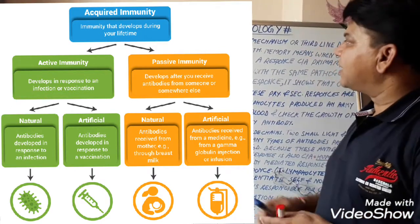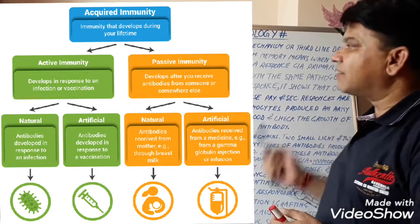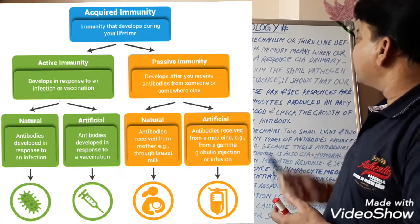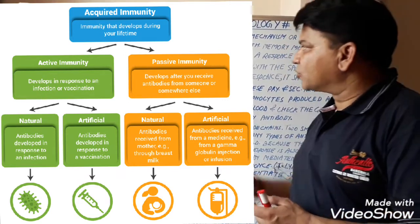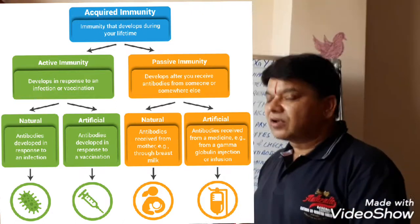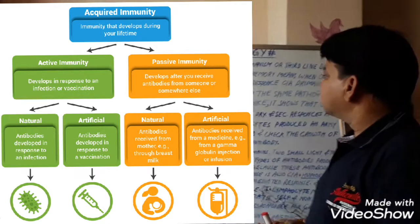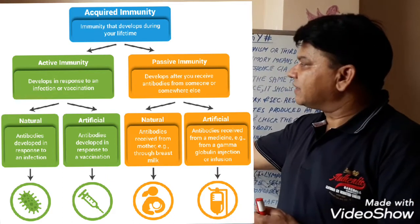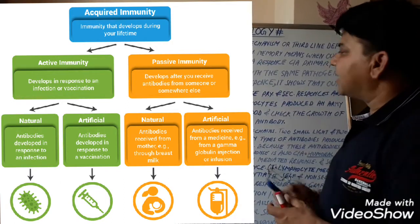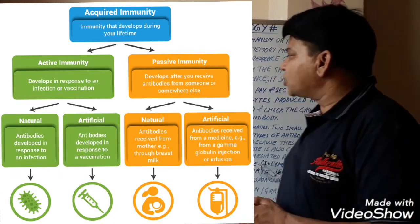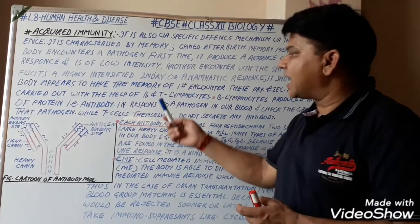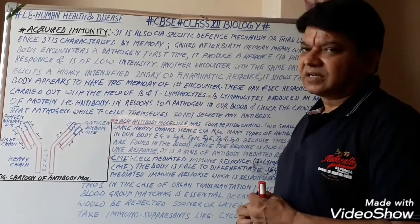Acquired immunity is also called the specific defense mechanism or the third line of defense. It is characterized by memory. When our body encounters a pathogen for the first time, it produces a primary response, which is of low intensity. Another encounter with the same pathogen elicits a highly intensified secondary or anamnestic response, showing that our body has memory of the first encounter. These primary and secondary responses are carried out with the help of B lymphocytes and T lymphocytes.